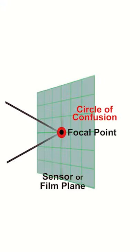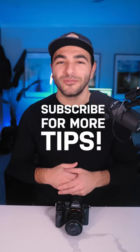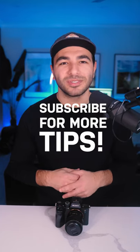And number four: circle of confusion — which the name says it all. This is what is actually considered acceptably in focus at the focal point, and it's influenced by numerous factors, so we won't dive too deep into it in this video. I hope that helps you understand the key factors that influence depth of field. Subscribe for more photo and video tips.